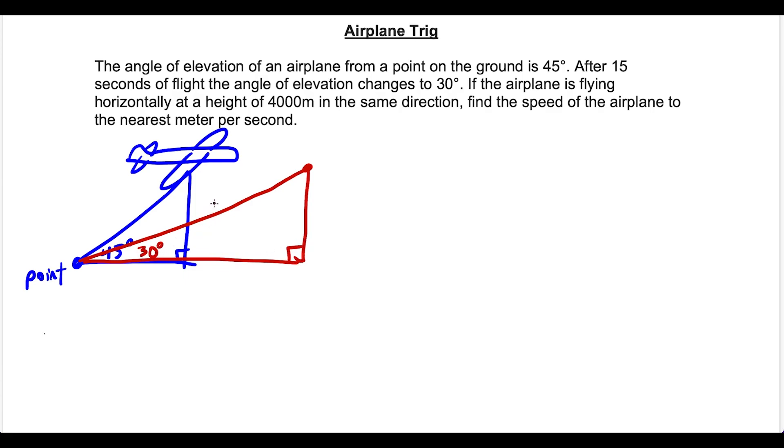So what we're trying to find with all this information is what is the speed of the plane. One thing to consider here is that the plane is flying horizontally at a height of 4,000 meters in the same direction. So that tells us that in both of these triangles that the vertical distance here is going to be 4,000 meters. So that's not changing. The plane is flying horizontally. So we could label that and it's going to stay constant in both triangles.